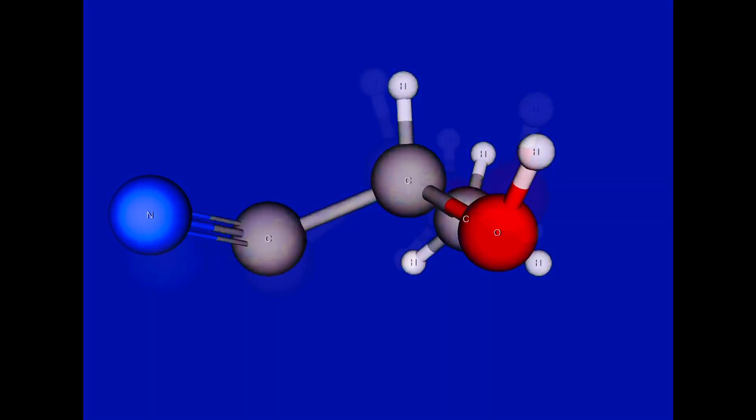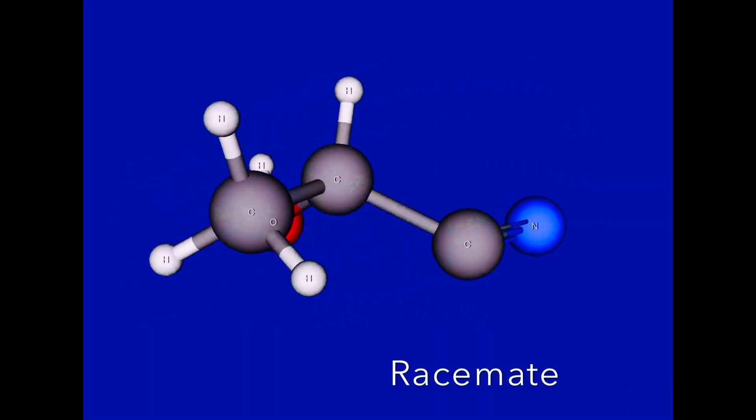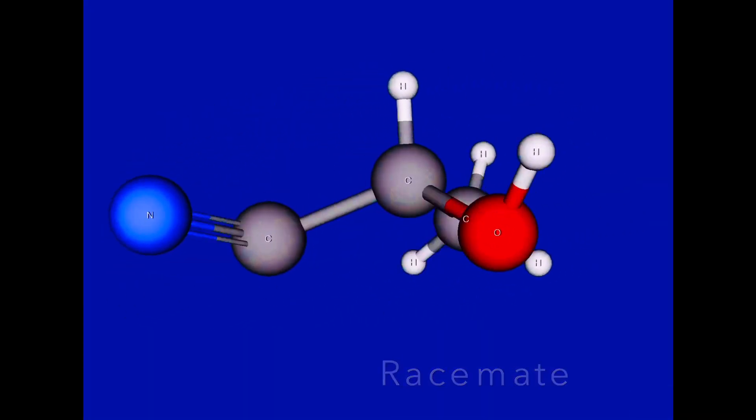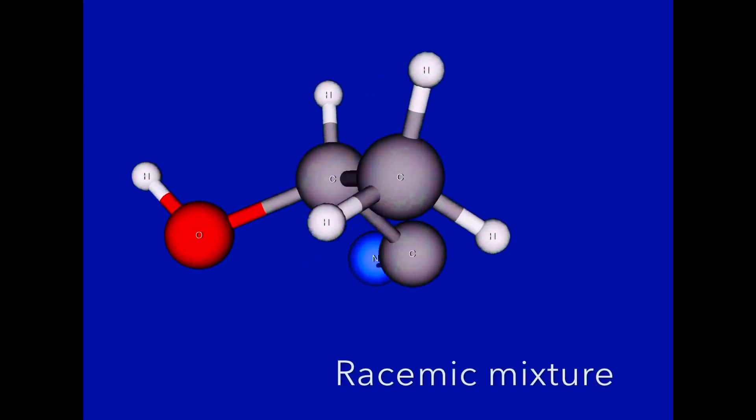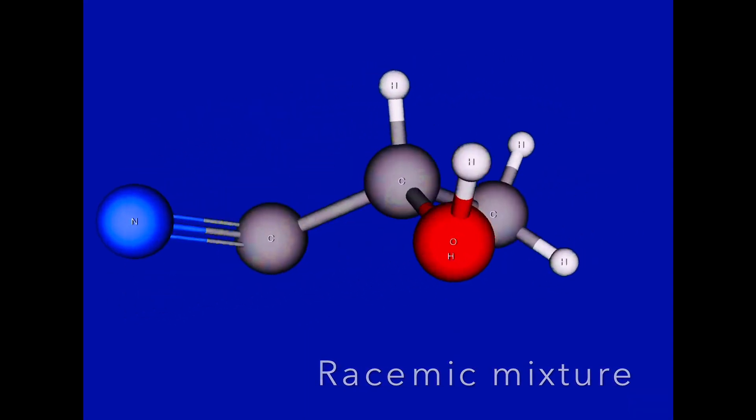Equimolar mixture of both enantiomers will result in no optical isomerism and the mixture is called a racemate.